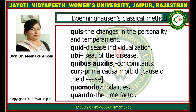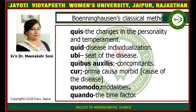First, the Bönninghausen classical method. According to Bönninghausen, there are seven points: (1) changes in personality and temperament, (2) disease in revitalization, (3) seat of disease, (4) concomitants, (5) primary cause, (6) modalities, and (7) the time factor. If you use Bönninghausen's classical method, you cover all these seven points after case-taking to create the totality, then follow the classical method to select a single, similar medicine.